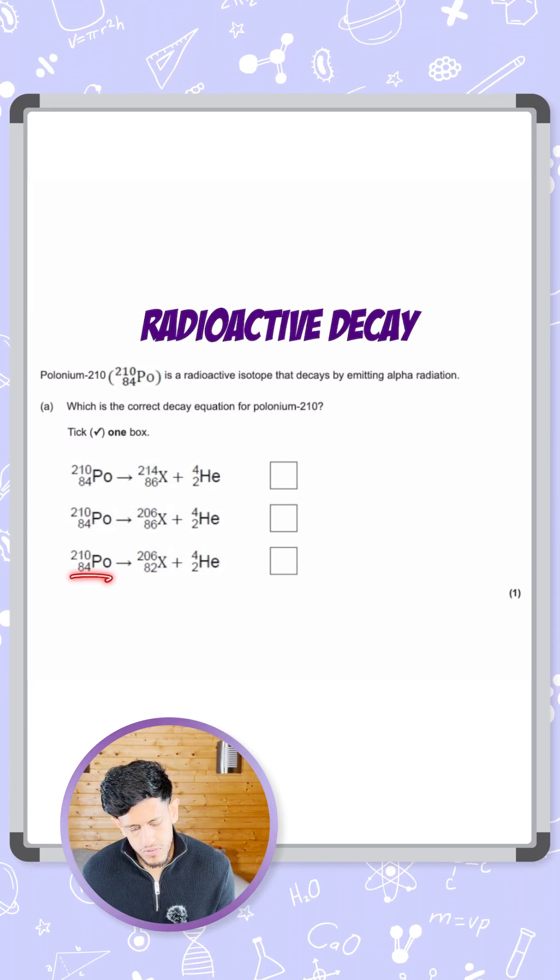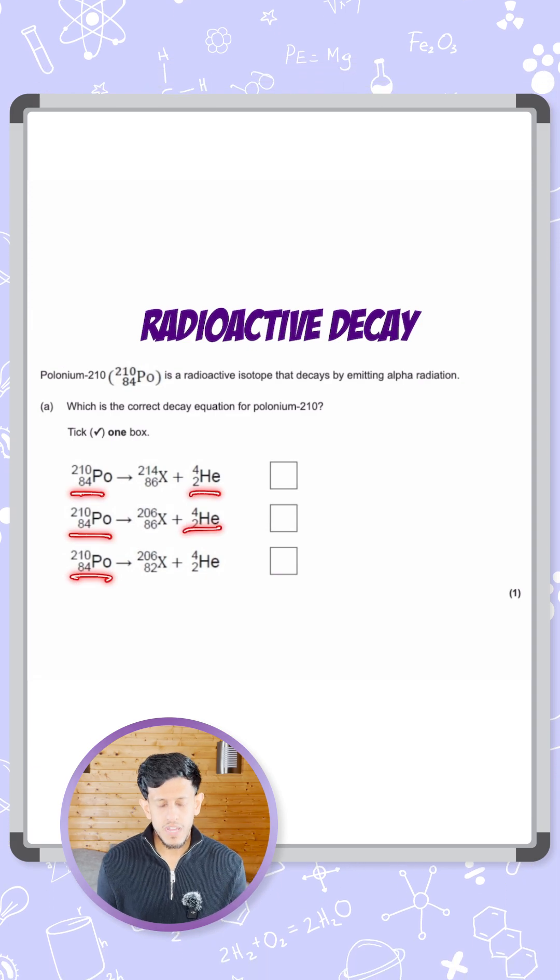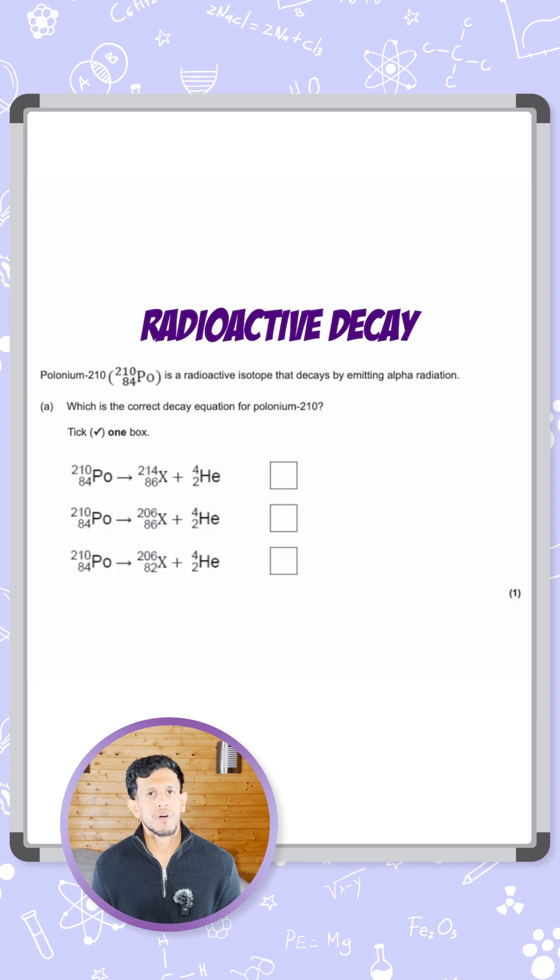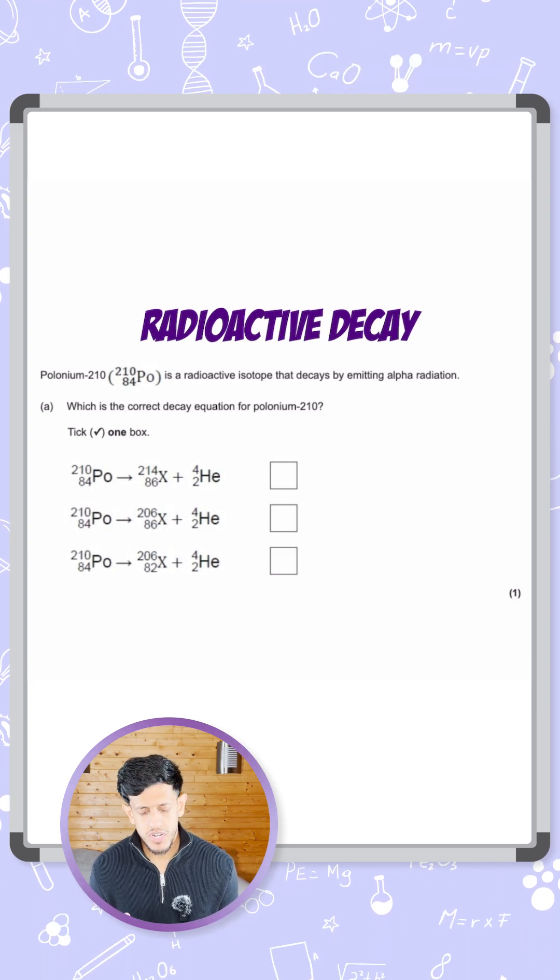So we know these two sides are all the same, so it's more focused on element X. And what we need to make sure is atomic number and the mass number on both the left and right-hand side of the equation are balanced.